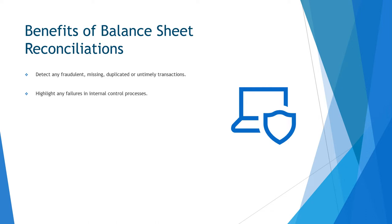Being able to highlight any failures in internal control processes — ask yourself, if the transaction doesn't belong here, why is it here? Ensuring timely and accurate payment of superannuation, PAYG withholding, and the various taxes, helping to avoid penalties for late or incorrect payments.